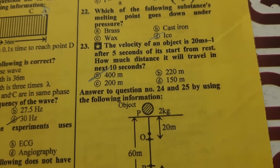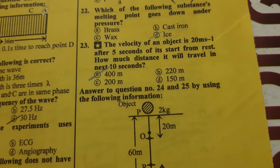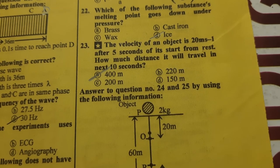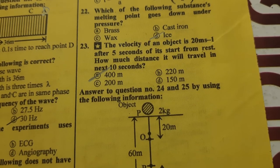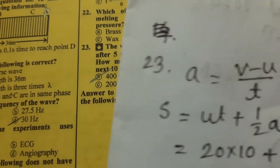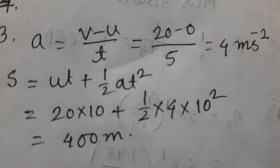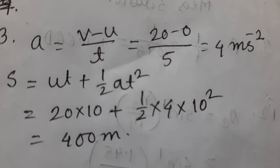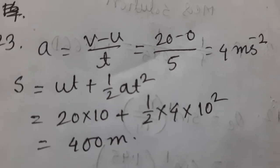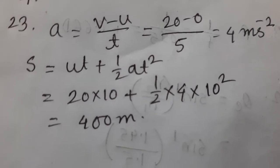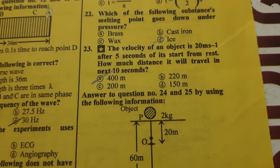Question number twenty-three: the velocity of an object is 20 m/s after 5 seconds of starting from rest. How much distance will it travel in the next 10 seconds? Acceleration a = (v − u)/t = (20 − 0)/5 = 4 m/s². Then s = ut + ½at² = 20×10 + ½×4×100 = 200 + 200 = 400 m. The answer is option A — 400 metres.